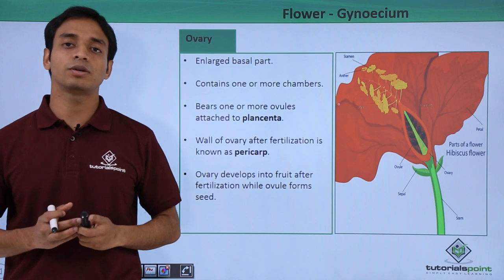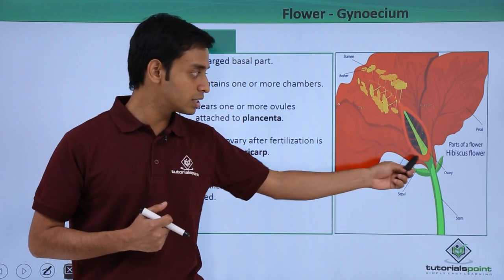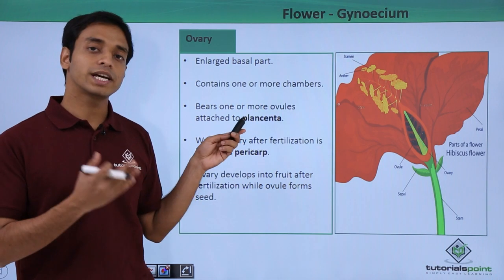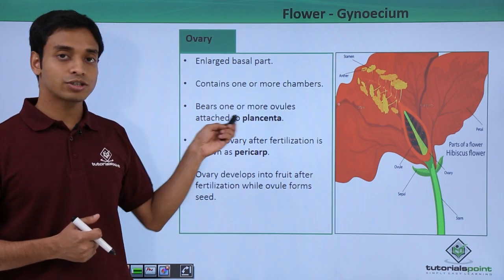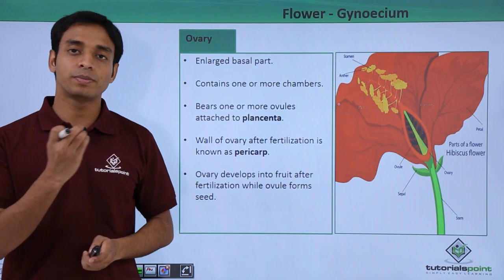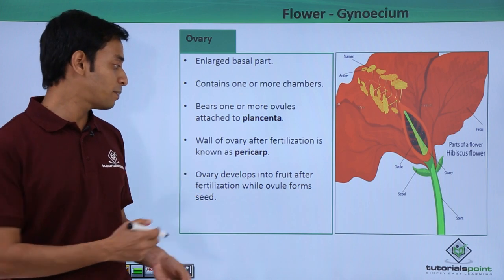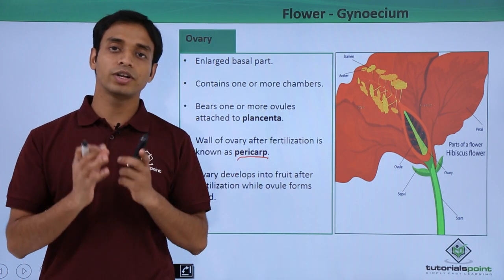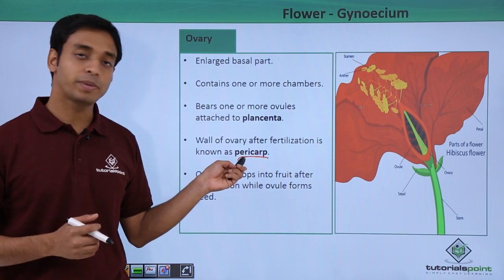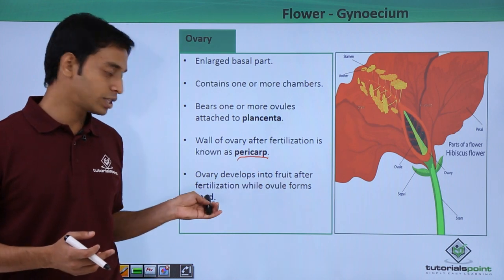The ovary is the most essential part of the female reproductive structure — it is the enlarged basal part. A cross-sectional view shows the ovary contains one or more chambers and bears one or more ovules attached to the placenta, which is the green portion shown in the picture. The black-colored portions are the ovules where female gametes are present. After fertilization, the wall of the ovary becomes the pericarp — the outer covering of the fruit. The ovary develops into a fruit and the ovule develops into a seed after fertilization.